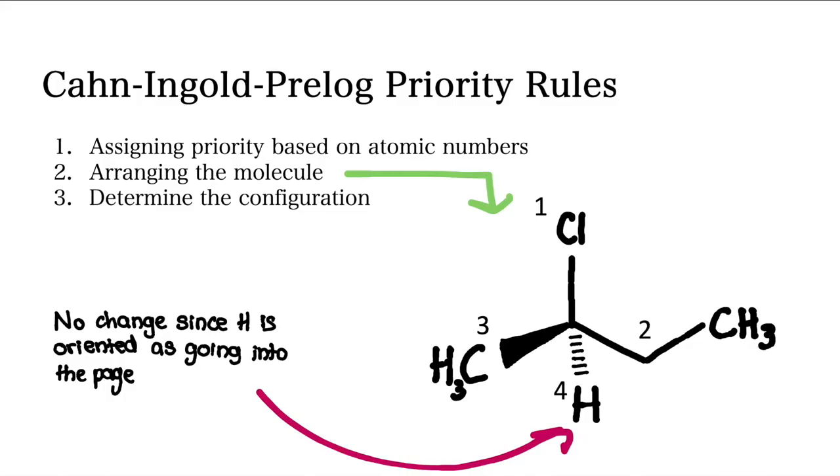And now let's move to the second rule, which is arranging the molecule. This step entails positioning the molecule so that the lowest priority group is pointing away from you. If this is needed, then you mentally rotate the molecule to achieve its orientation.